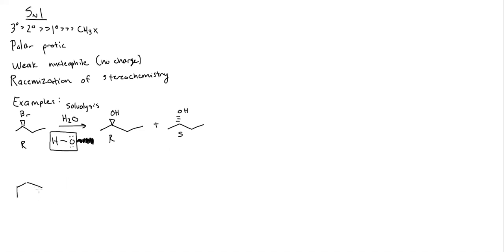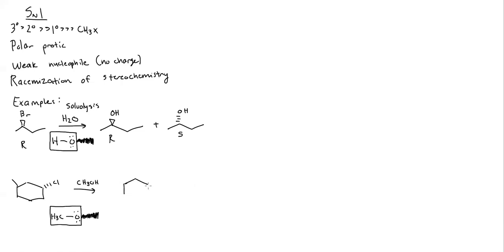Let's do one more example with a ring. We'll put a chlorine on a dash and use methanol as the solvent. Methanol's oxygen is going to be my nucleophilic atom, so I take a hydrogen off of it and write OCH₃ as the substituent. Where the halogen was, I write OCH₃ on a wedge, and also on a dash. That's all I need to do — that's my entire reaction for SN1.